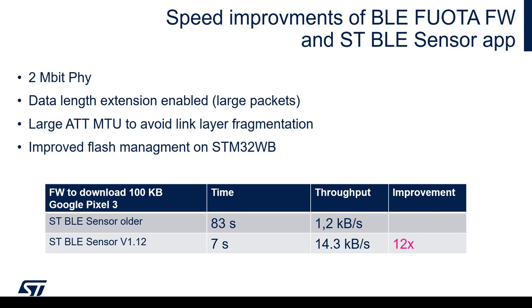To maximize the throughput, we enabled the 2 megabit PHY, we set the link layer packet to its maximum size, and also the protocol data unit of the higher levels to avoid any fragmentation, and we also improved the flash management on STM32WB. The result is the speed is increased by a factor of 12, so to transmit an application which is 100 kilobytes in size takes approximately 7 seconds.